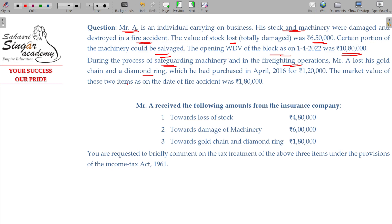Gold chain and diamond ring which had been purchased in April 2016 for 1 lakh 20. The cost of acquisition is April 2016, which is the previous year. The market value of these two items on the date of fire accident being 1 lakh 80. Market value.